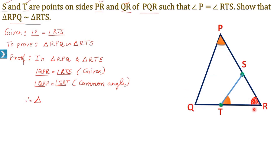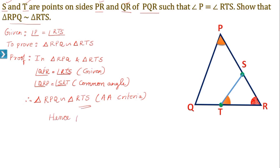Therefore, triangle RPQ is similar to triangle RTS. See here, for angle R it is equal to angle R, and for angle P it is equal to angle T of triangle RTS. So triangle RPQ is similar to triangle RTS by the AA criteria. Hence proved.